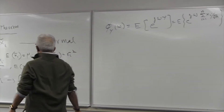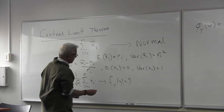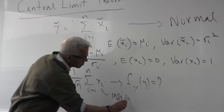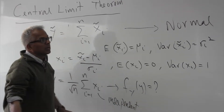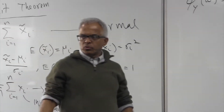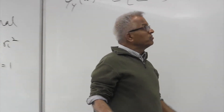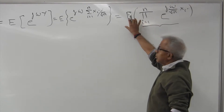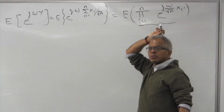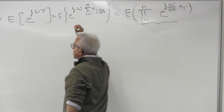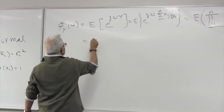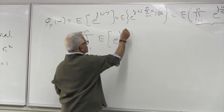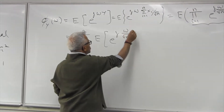I am going to do the case where these xi's are independent. There is a general case where they are not independent, but the proof here is for independent variables. If these random variables are independent, then the expectation of the product of functions equals the product of the expectations. So the product sign comes out, and we get product from i=1 to n of E[e^(jω/√n · xi)].